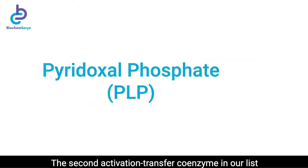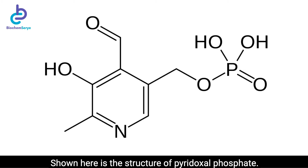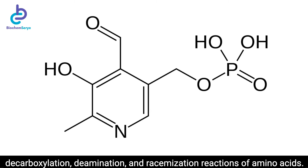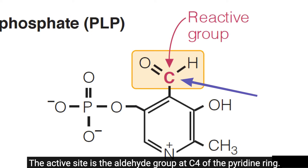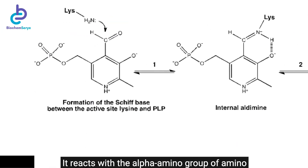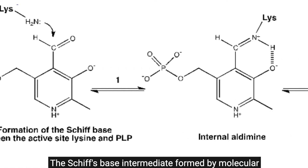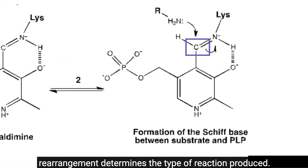The second activation transfer coenzyme in our list is pyridoxal phosphate, abbreviated as PLP. Shown here is the structure of pyridoxal phosphate. It acts as a coenzyme in all transamination reactions, and in certain decarboxylation, deamination, and racemization reactions of amino acids. The active site is the aldehyde group at C4 of the pyridine ring. It reacts with the alpha-amino group of amino acid substrates to yield a Schiff base.